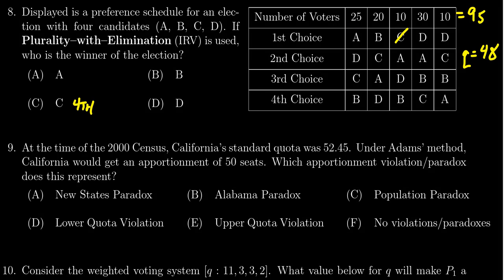We have to remove the next candidate with the fewest first-place votes, which is player B who only has 20. So player B would be in third place. C was already removed, so they're not being considered.